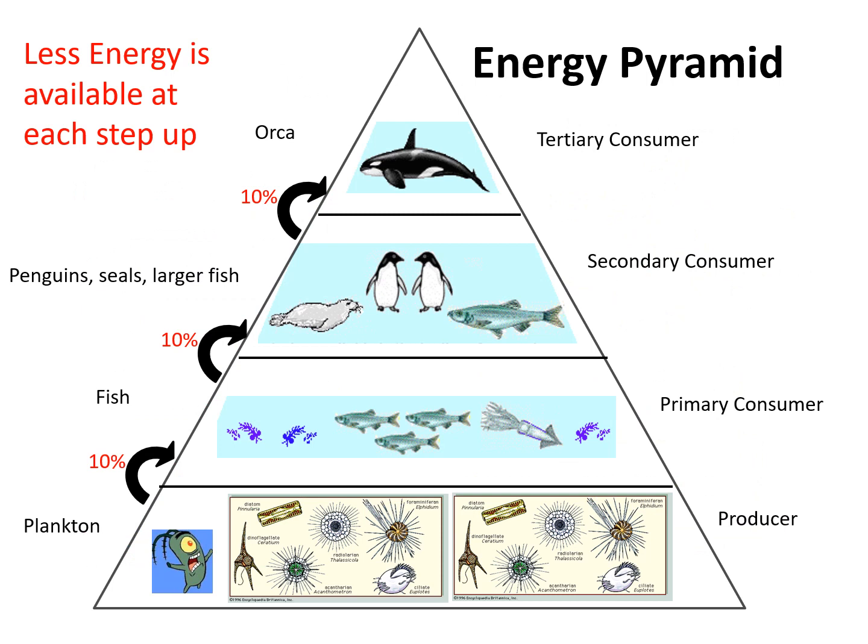Here is another example in the ocean — we've got plankton at the bottom, then fish, penguins, and an orca at the very top. Less and less energy is available as you go up.